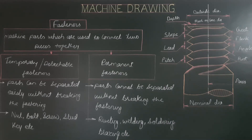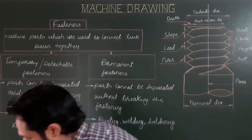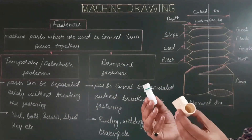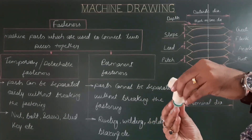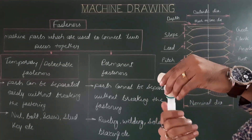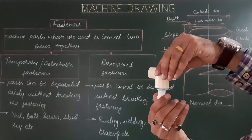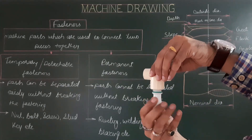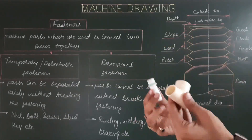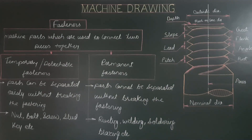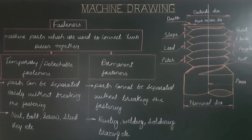Temporary or detachable fasteners are those for which parts can be separated easily without breaking the fastening. So if two machine parts are joined, after the fastening process, the joint can be removed or separated easily without breaking. Examples are nut-bolt pair, screw and nut pair, stud, and key.